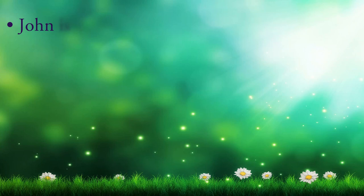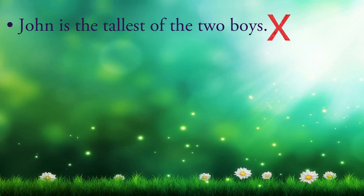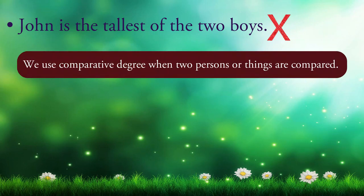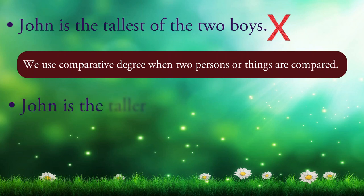Now look at this sentence: John is the tallest of the two boys. Please note, we use the comparative degree when two persons or things are compared. Now repeat the correct sentence after me: John is the taller of the two boys.